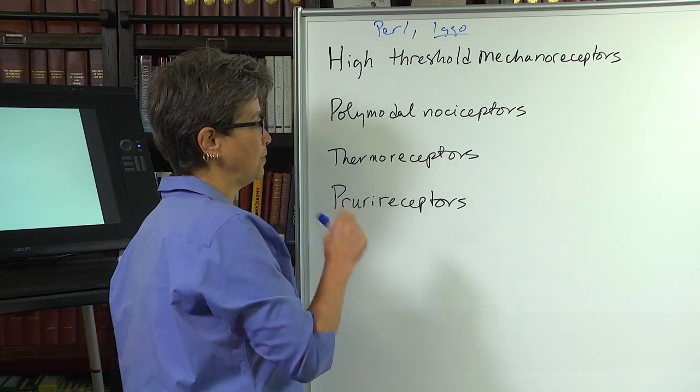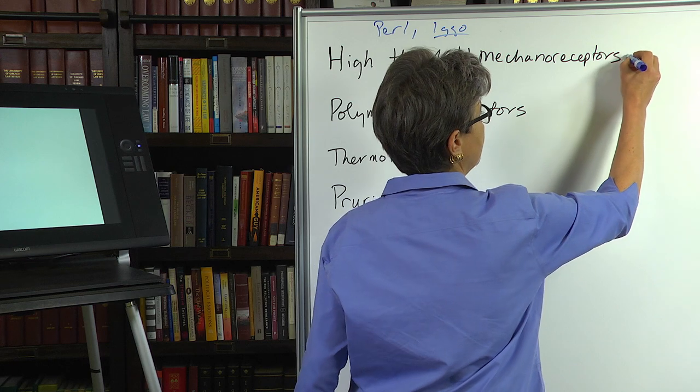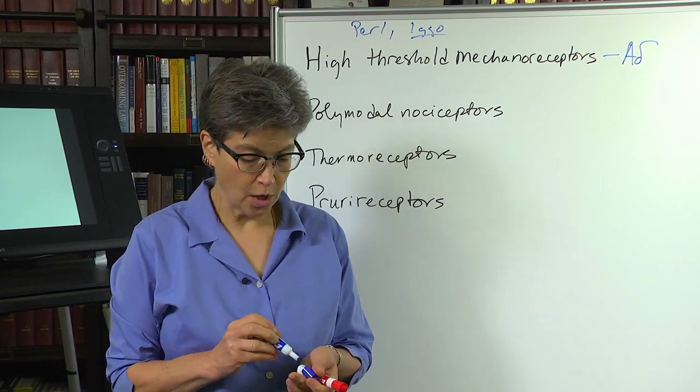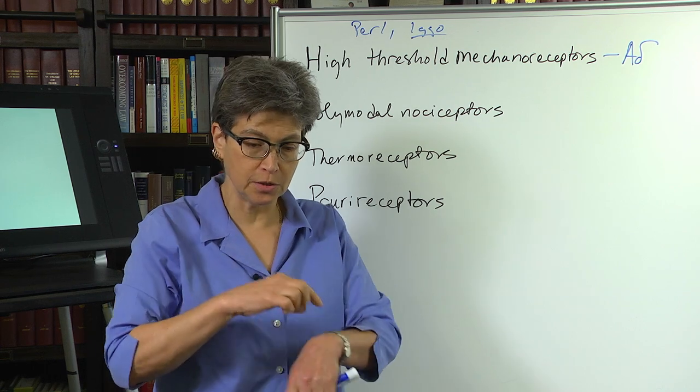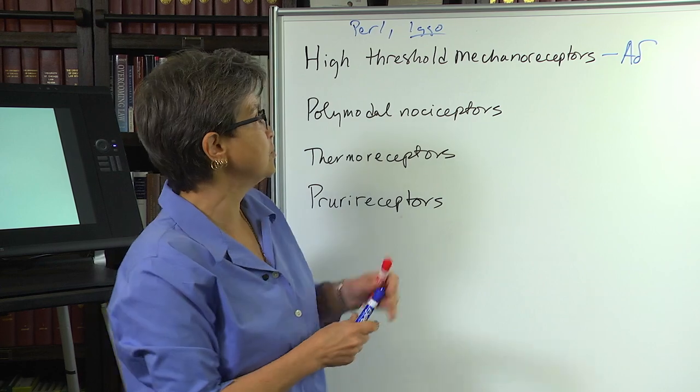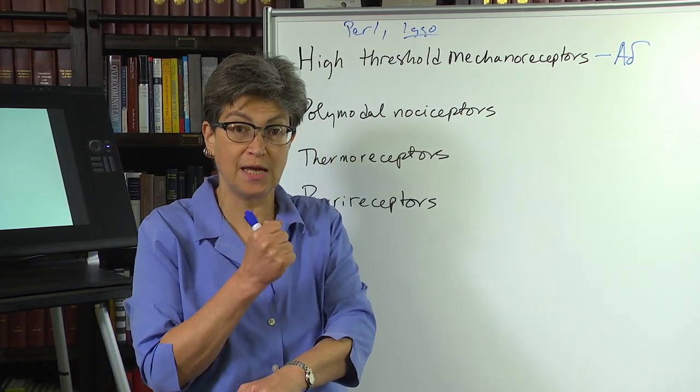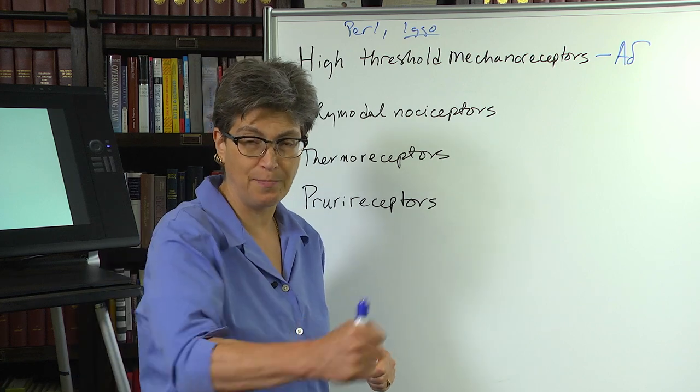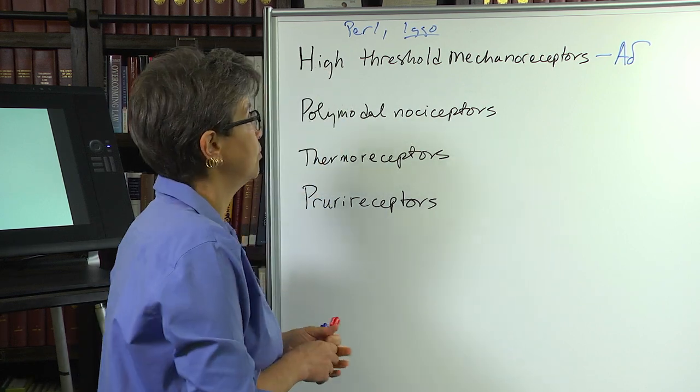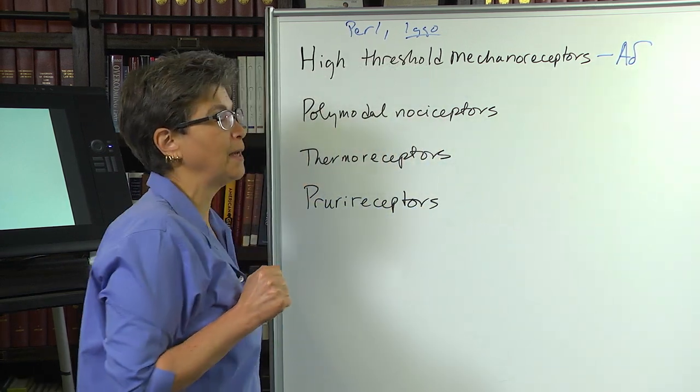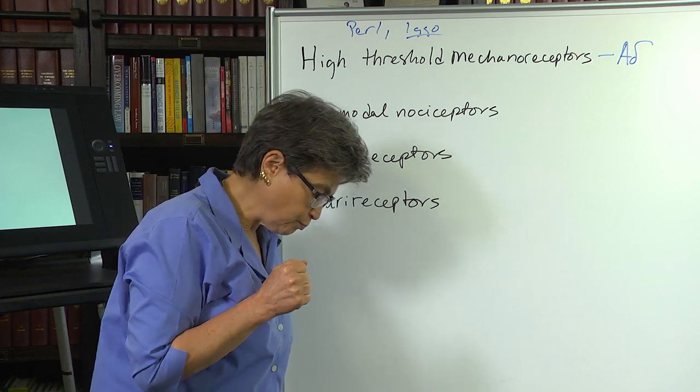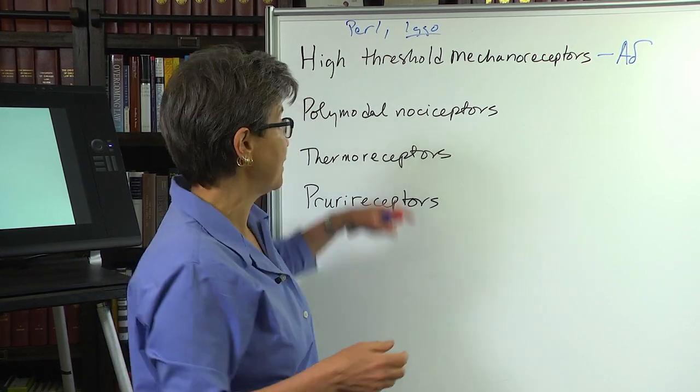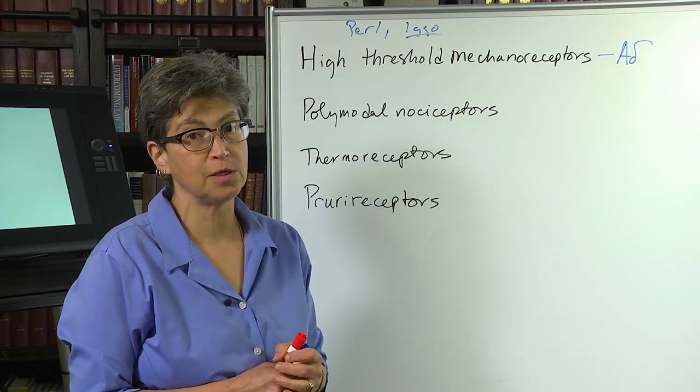So nociceptors can be divided into a few different categories. The high-threshold mechanoreceptors, which are responsive to very sharp, very noxious deformation of the skin. These are the receptors that are going to be responsive to, say, a needle prick, or a bang on the skin, a bruising bang. And these are carried by A-delta fibers, so relatively fast. So if you stub your toe on something, the information that you just stubbed your toe, that's coming through these A-delta high-threshold mechanoreceptors, or HTMs.